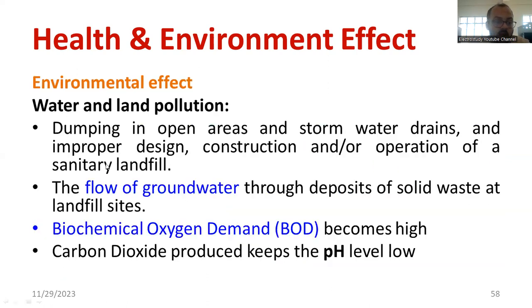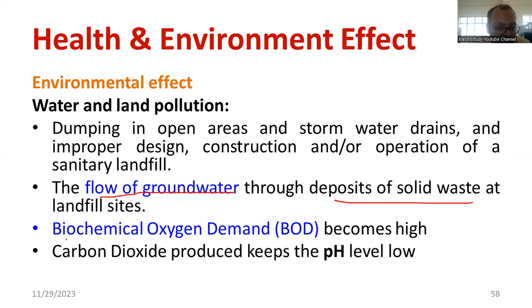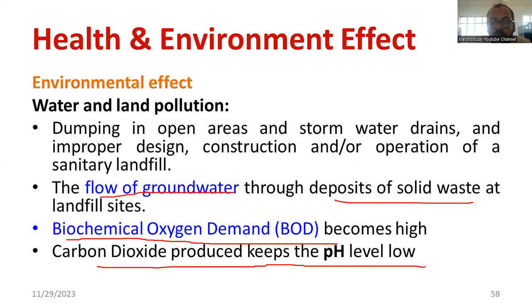Another impact is water and land pollution — from dumping of waste material on water bodies and flow of groundwater through solid waste. This increases the biochemical oxygen demand (BOD), reducing the amount of oxygen available for aquatic organisms. Similarly, carbon dioxide produced keeps the pH very low, making the water more acidic. Neutral water should have a pH of 7, but it becomes more acidic because of this. These are major impacts to consider.